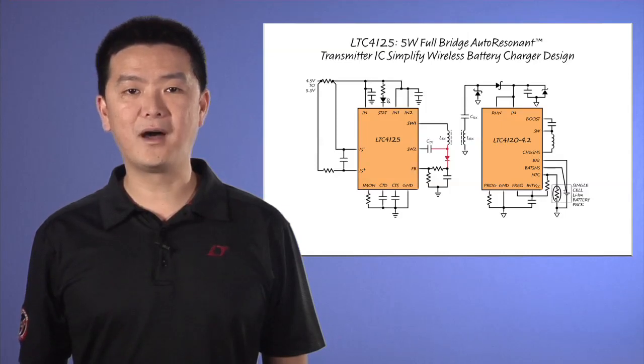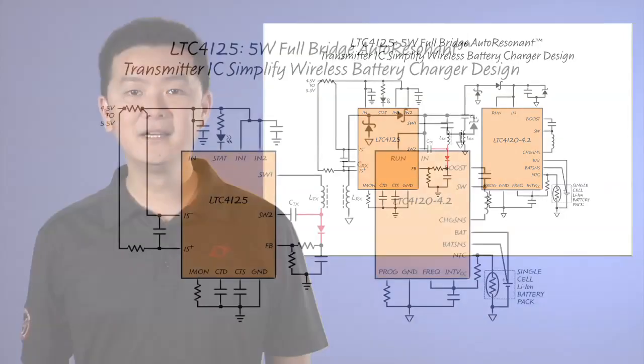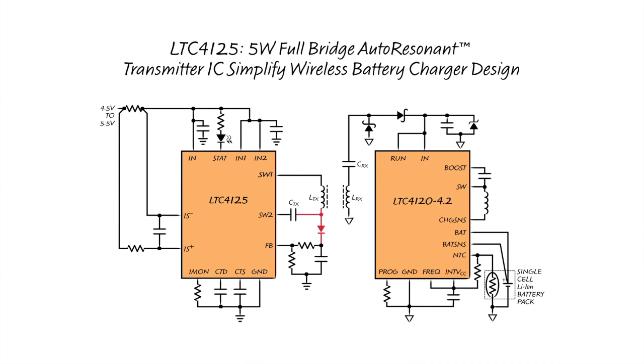a new auto-resonant wireless power transmitter IC with integrated full-bridge switches capable of delivering up to 5 watts at the receiver. The LTC4125 transmitter IC is designed to pair with one of the various battery charger ICs in Linear Technology's portfolio as the receiver IC. Here in this diagram, it is paired with the LTC4120.